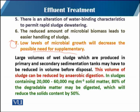Large volumes of wet sludge, which are produced in primary and secondary sedimentation tanks, may have to be reduced in volume before disposal. The volume of sludge can be reduced by anaerobic digestion. In sludge containing 20,000 to 60,000 milligrams per liter of solid matter, up to 80 percent of the degradable matter may be digested, which will reduce the solid content by 50 percent.